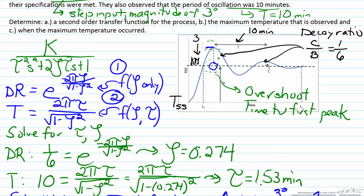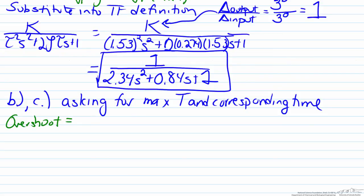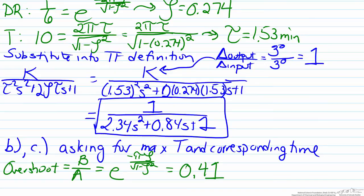We can use the values that we just found for zeta and tau to find those two parameters. So when we do that an overshoot is defined as b over a, which is equivalent to the exponential of negative pi zeta over the square root of one minus zeta squared. So again this is only a function of zeta. So if we substitute the zeta in here we can find the fact that the overshoot is 0.41.